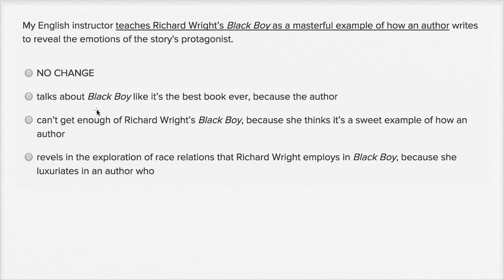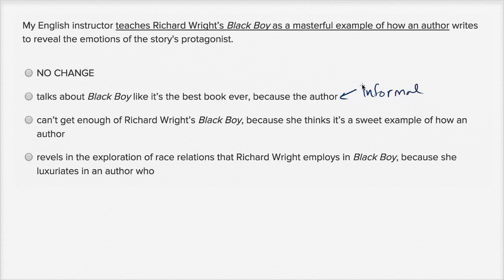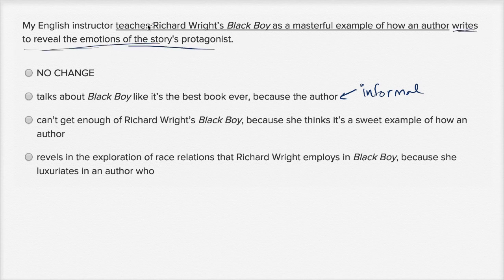My English instructor talks about Black Boy like it's the best book ever because the author writes to reveal the emotions of the story's protagonist. The tone here just seems too informal. It might be how some folks talk, but it isn't how you necessarily want to write, especially since the rest of the sentence — 'writes to reveal the emotions of the story's protagonist' — doesn't have that informal tone. It feels weird, so I would rule this one out.